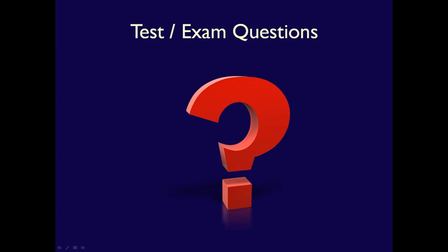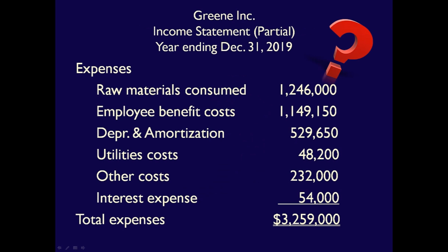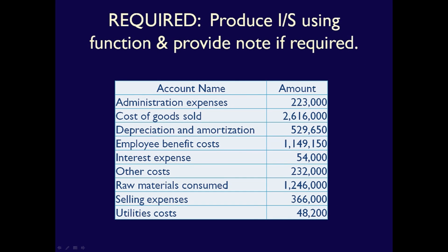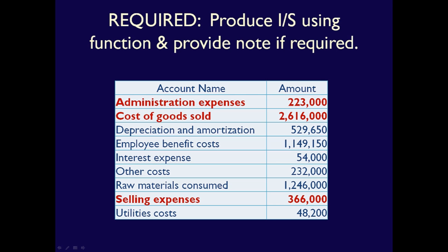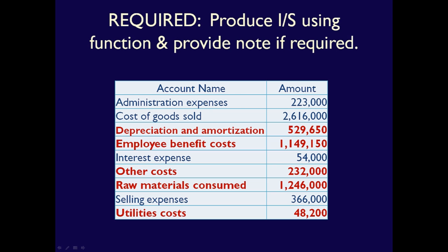How does all this translate into a question you may see on a test or exam? You may get a Statement of Income, Comprehensive Income and be asked whether it is by nature or by function. You may get a listing of accounts which includes both, and then be asked to produce a statement by either function or nature. If you include all the expenses on your statement, the expenses will be double what they actually are. The key is to be able to differentiate the expenses by function from the expenses by nature so that you can produce the statement requested.